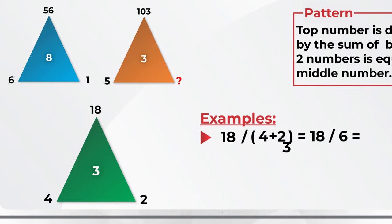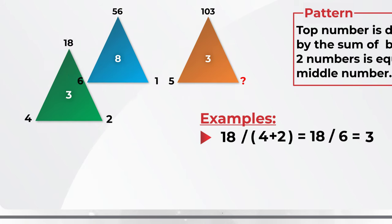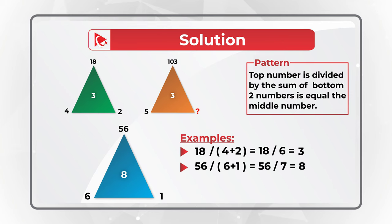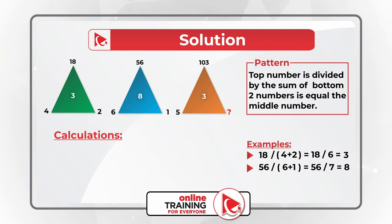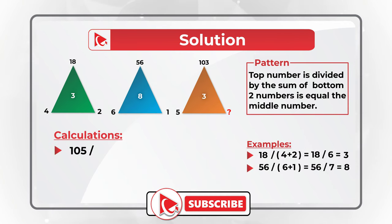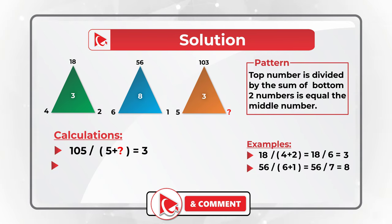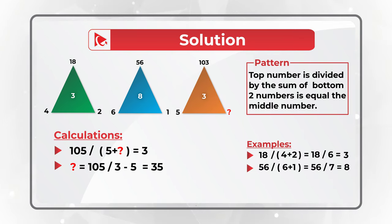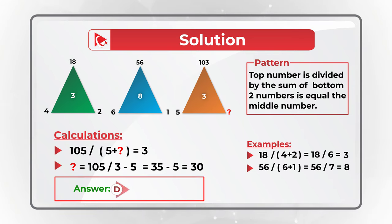In the second triangle: 56 divided by (6 plus 1) equals 56 divided by 7, which equals 8. For the third triangle: 105 divided by (5 plus the missing number) equals 3. So 105 divided by 3 equals 35, and 35 minus 5 equals 30. The answer is choice D, 30.